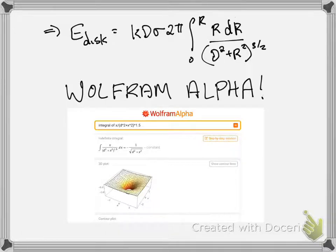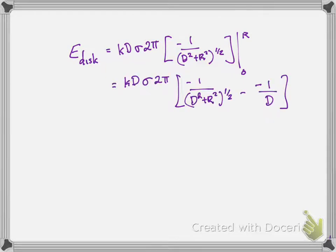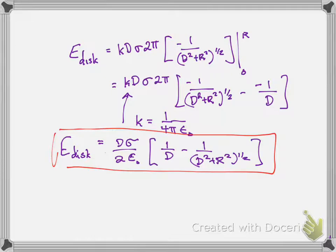We have an answer for that integral, so I go ahead and plug it back into our expression for E with limits from 0 to R. After plugging in the limits R and 0, I simplify by substituting k = 1/(4πε₀) and doing a little bit of algebra to get a cleaner expression.